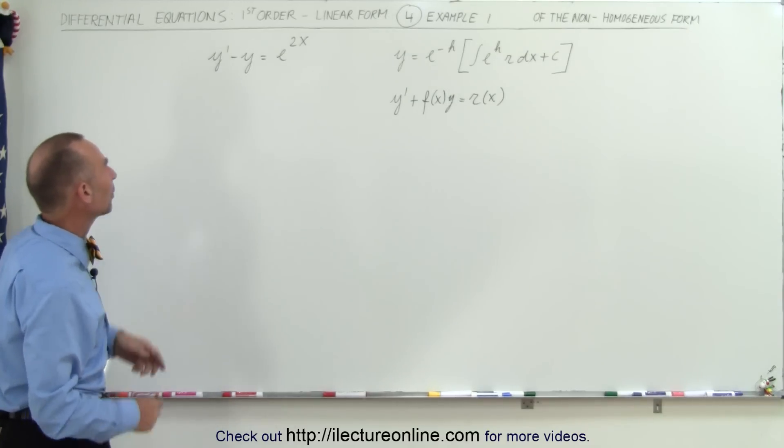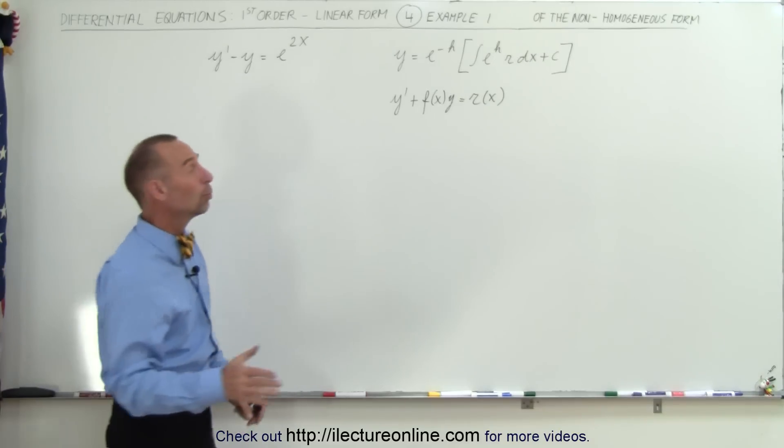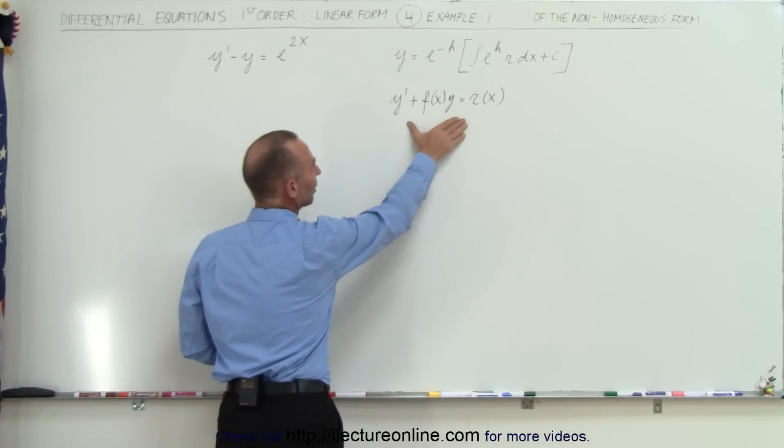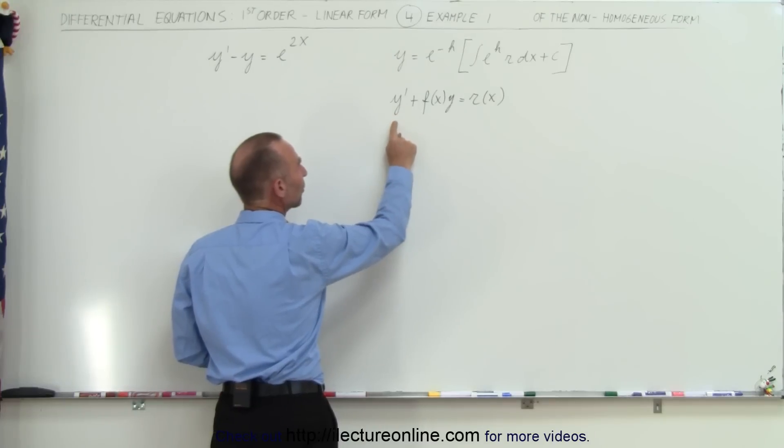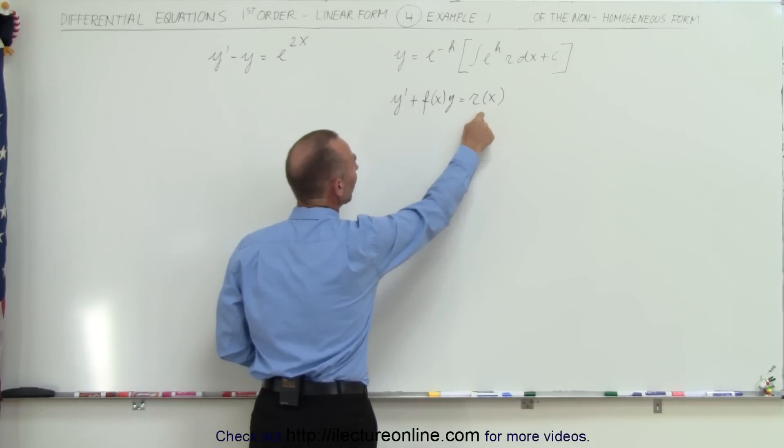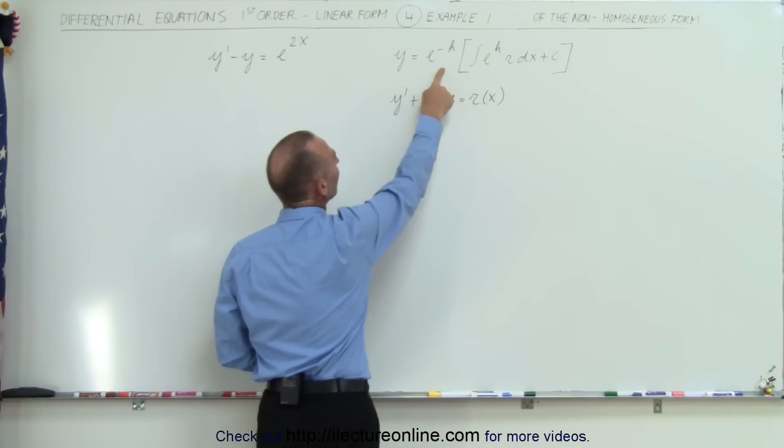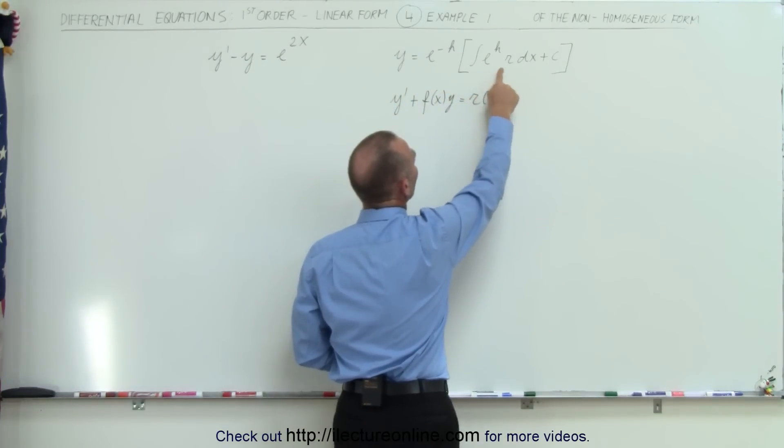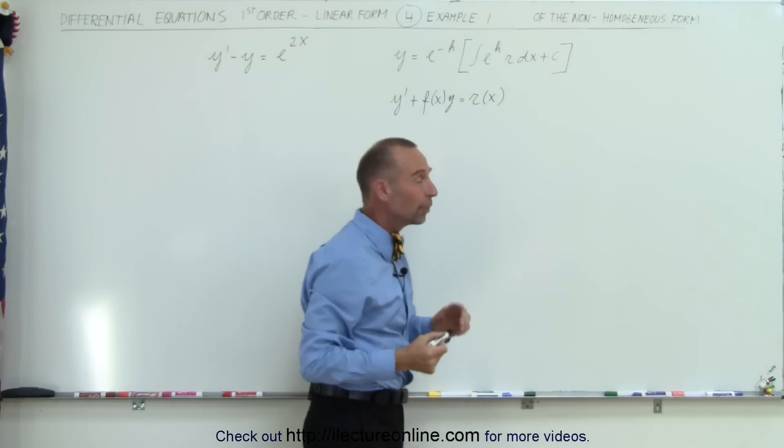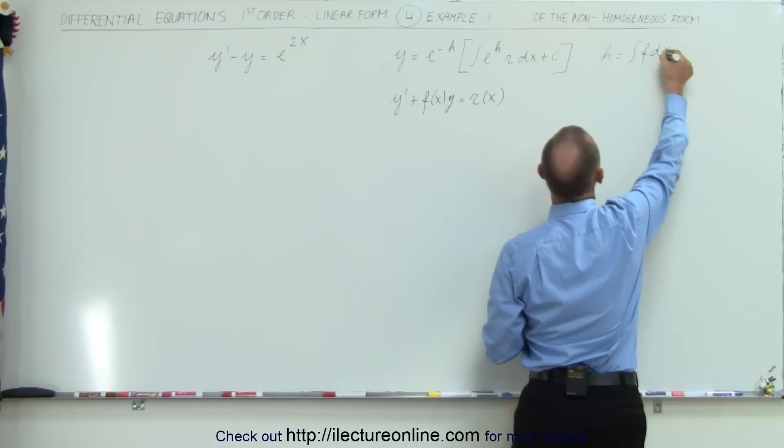So here we have our first example: y' minus y equals e to the 2x. Remember, the non-homogeneous form of a first-order linear differential equation is written as y' plus some function of x times y equals some other function of x. The general solution is y equals e to the minus h times the integral of e to the h times r dx plus c, remembering that h is equal to the integral of f dx.